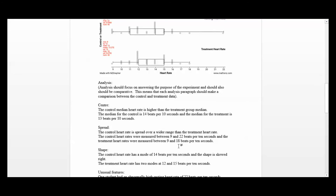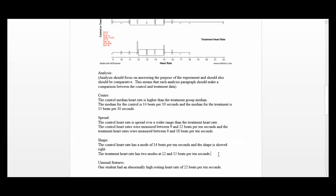For shape: the control heart rate has a mode of 14 beats per 10 seconds, and the shape is skewed right — you can see that to the right side there's a tail causing a right skew. The treatment heart rate has two modes: the main one being at 12 and there's one at 15. This is a bimodal shaped distribution.